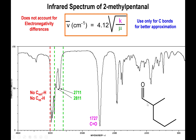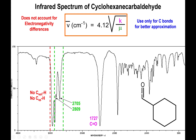Looking at another aldehyde derivative, you have your aldehyde carbonyl peak once more at about 1720 to 1727, and then those dual peaks between 2600 and 2800. And looking at another aldehyde containing a cyclohexane ring, you still have those two peaks between 2600 and 2800, and still a strong peak at about 1727.